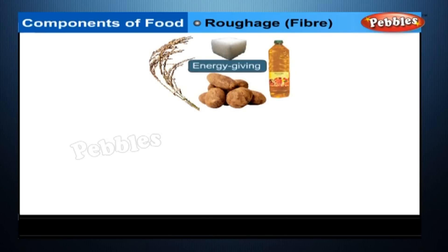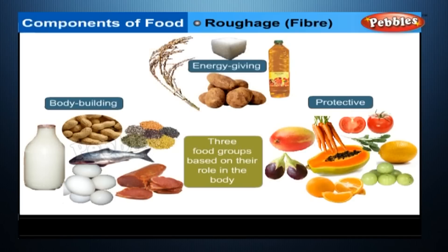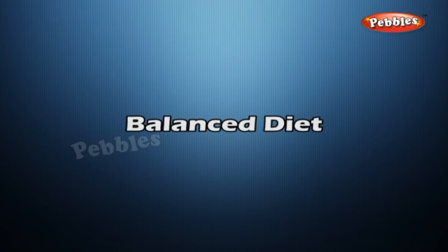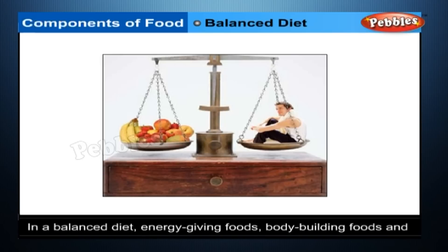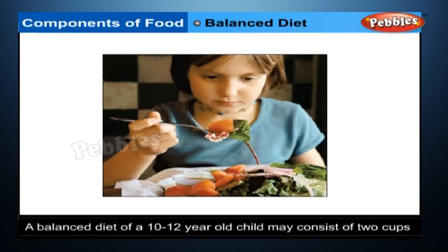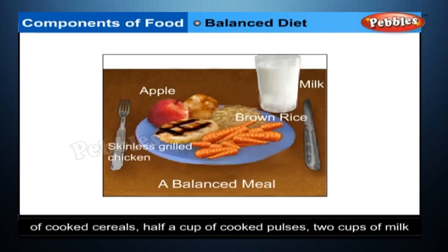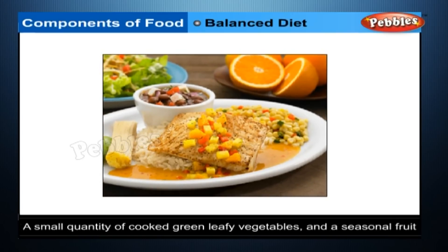Types of Food: Energy-giving foods include carbohydrates and fats. Body-building or growth-promoting foods include proteins. Protective foods include vitamins and minerals. Balanced Diet: A diet containing all the nutrients in their proper quantities is known as a balanced diet, where energy-giving foods, body-building foods and protective foods are present in correct proportions. The balanced diet of a 10–12 year old child may consist of two cups of cooked cereals, half a cup of cooked pulses, two cups of milk, a small quantity of cooked green leafy vegetables and a seasonal fruit.